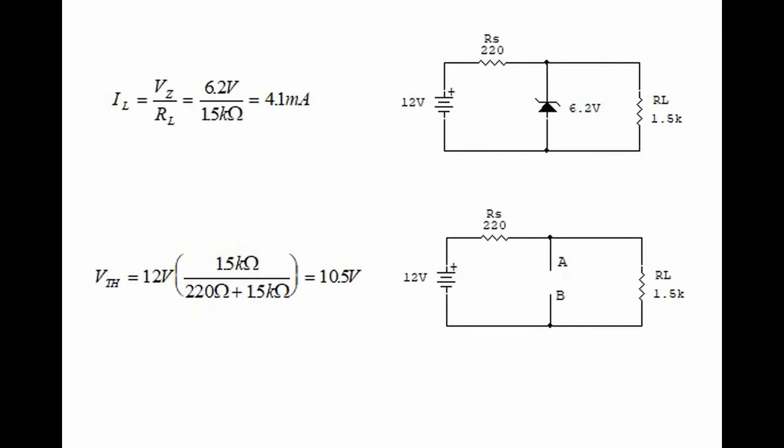There are times when the zener diode circuit might be more complex, in which case we have to use the Thévenin method. First, let's find the current through the load, which in this case is 6.2 volts divided by 1.5 kilohms, which equals 4.1 milliamps. We will need this calculation later on.